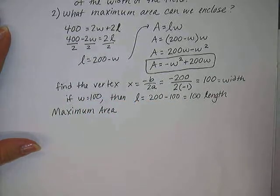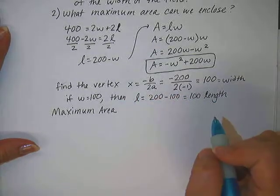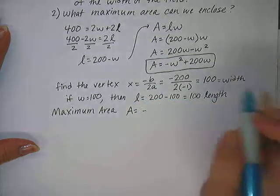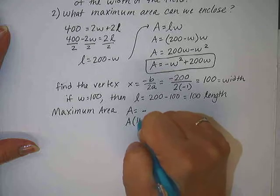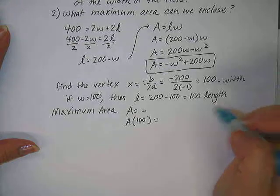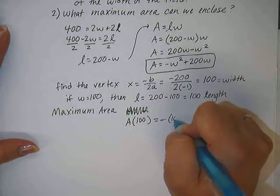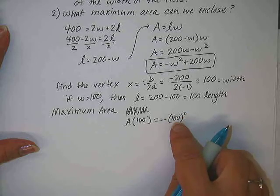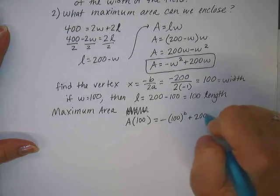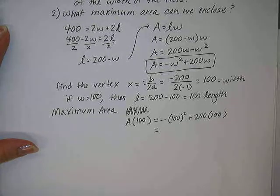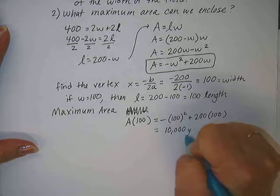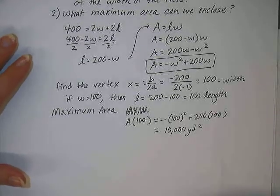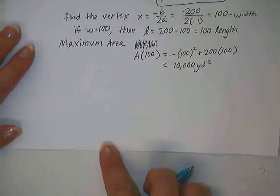So then what is the maximum area? Well, the maximum area will happen when the width is 100 and the length is 100. So we can either just do that problem, 100 times 100, and get our answer of 10,000, or we can actually use our function that we created in the first place. So let's practice doing that. So what we're seeing is the function of 100, when the width is 100, would be negative 100 squared. Now that negative is separate from the w, so when we plug in width, we're not going to square the negative, we just square the 100 and then it stays negative. Plus 200 times 100. If we work that out, we get the same answer we got when we did length times width, which is 10,000 square yards for the maximum area.